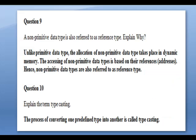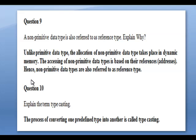Next: non-primitive data types are also referred to as reference types — explain why. Unlike primitive data types, the allocation of non-primitive data types takes place in dynamic memory. The accessing of non-primitive data types is based on their references, that is the memory address of that data type. Hence non-primitive data types are also referred to as reference types.